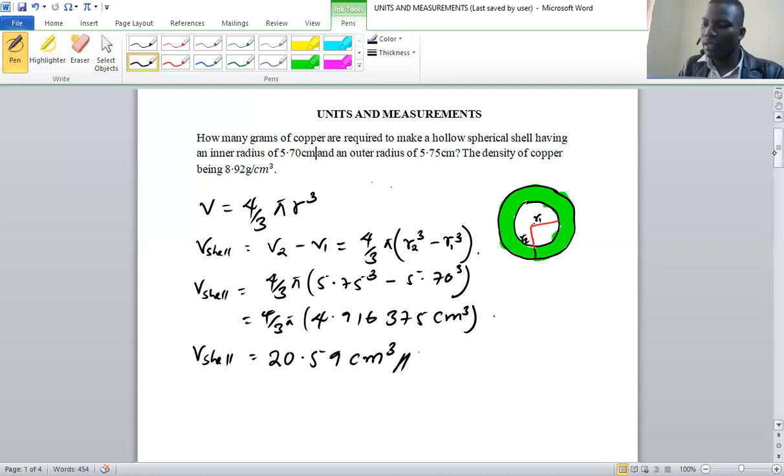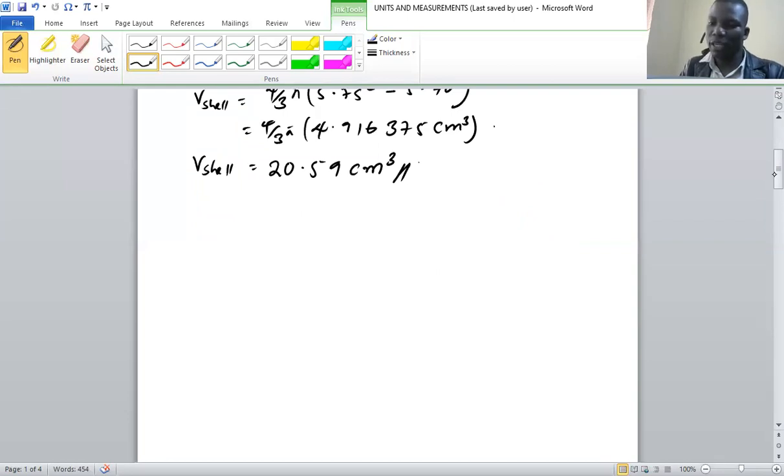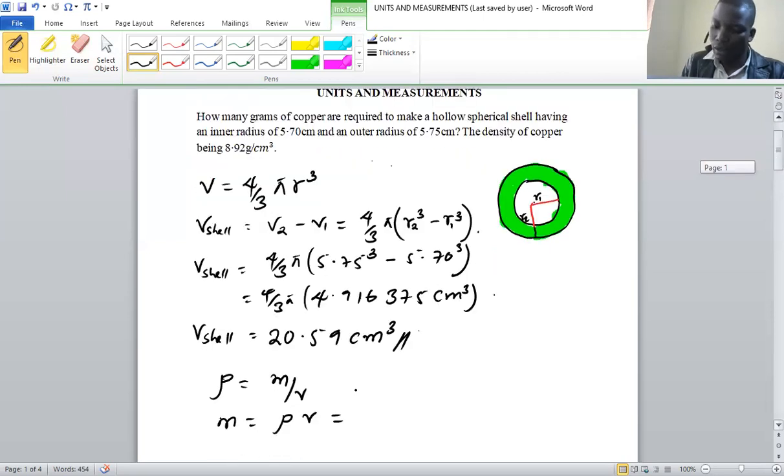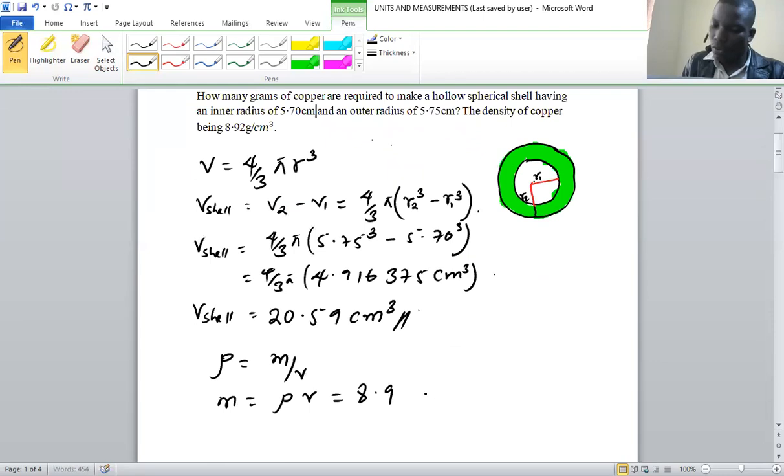And then now we can use this volume to find the mass of the shell. So we know that density is given by mass over volume, so mass is going to be density times volume, of which density we've been given. And then we multiply it with the volume that we have found, which is 20.59 cubic centimeters.